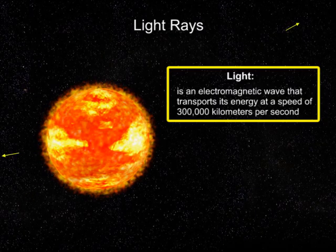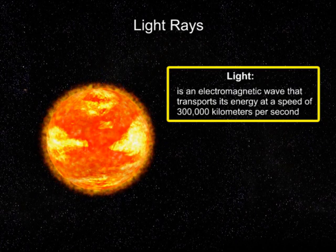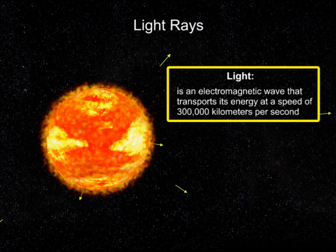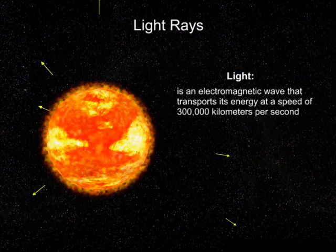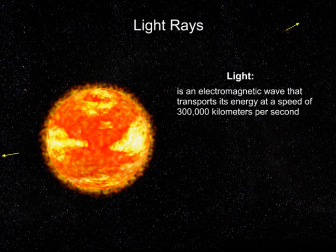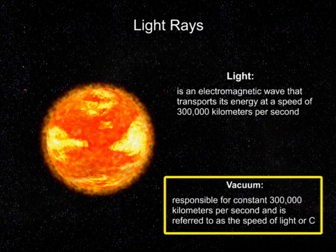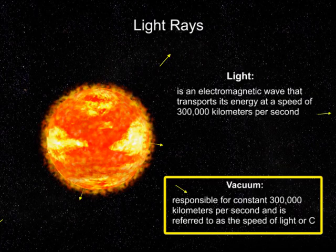Light is an electromagnetic wave that transports its energy at a speed of 300,000 kilometers per second. This constant speed is how fast light travels in a vacuum and is referred to as the speed of light, or C.